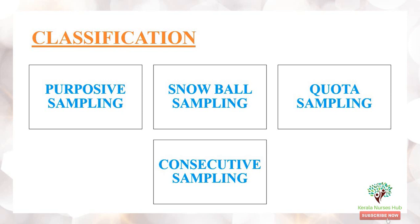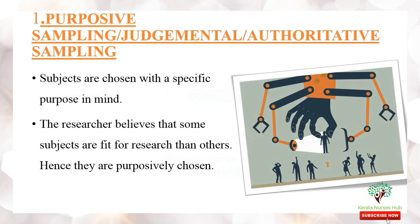The classification includes: first, purposive sampling; second, snowball sampling; third, quota sampling; and fourth, consecutive sampling. Purposive sampling is also known as judgmental sampling or authoritative sampling. Here the subjects are chosen with a specific purpose in the mind of the researcher, who believes that some subjects are more fit for the research than others, and those people are purposively selected.